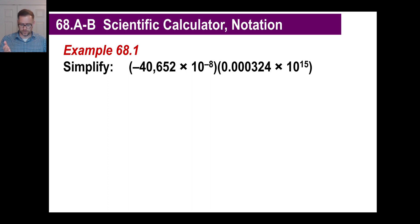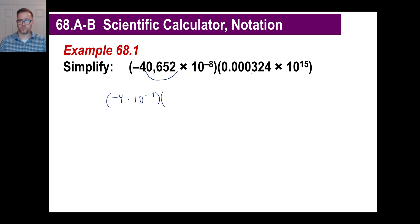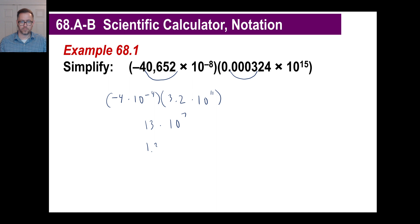It's a good idea to estimate your answer first. So let's look at these numbers: we have negative 4 times 10 to the negative fourth power, and then we also have something like 3.2 — roughly 3 — times 10 to the 11th power. So we're multiplying negative 4 times 3, which is about 13, and 10 to the negative 4 plus 11 is 7, giving us roughly 1.3 times 10 to the 7th or 8th power as our estimate.